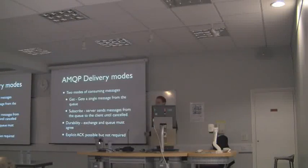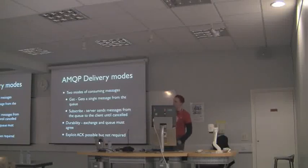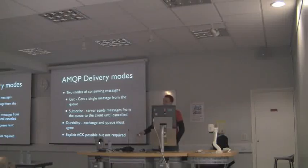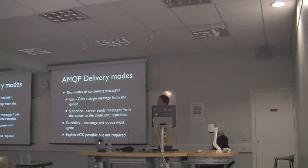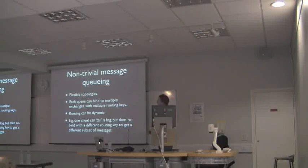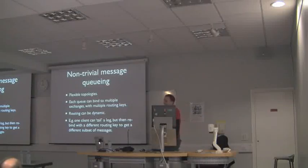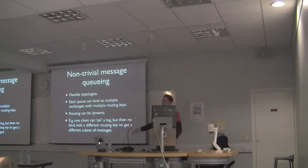AMQP also has two different delivery modes. There's one where your client says, I would like to get a message from AMQP please — so you get one message. Or you can say, I would like to just consume messages from the queue, and the server just sprays these messages at you until you say stop. AMQP also has explicit acknowledgement — you can take a message off the queue and do something with it, and if you crash before you've acknowledged it, the server will put that message back on the queue. The routing can be dynamic, so you can change how messages are routed in-flight while you're listening.